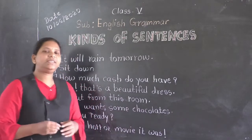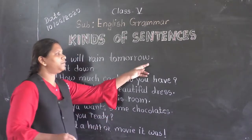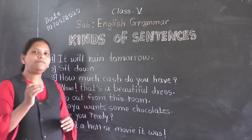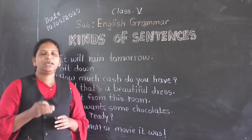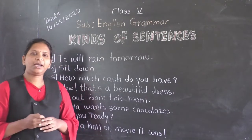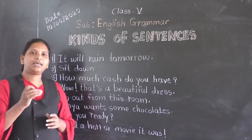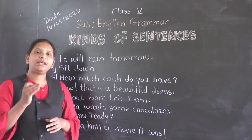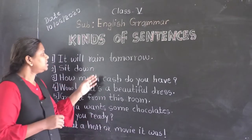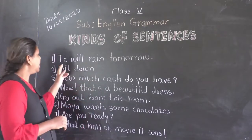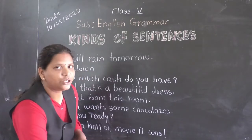Now we will identify the kinds of sentences in front of each sentence. If the sentence is imperative, write IN. If the sentence is interrogative, write IN. If the sentence is exclamatory, write E. And if the sentence is assertive, write E. Now see the first sentence: 'It will rain tomorrow.' So what type of sentence do you think?